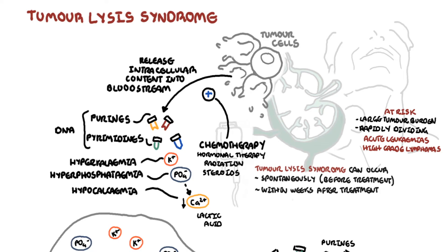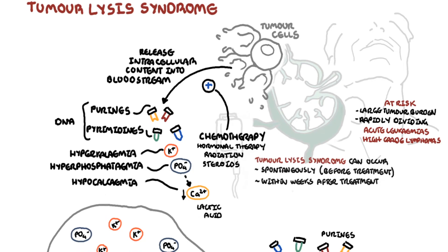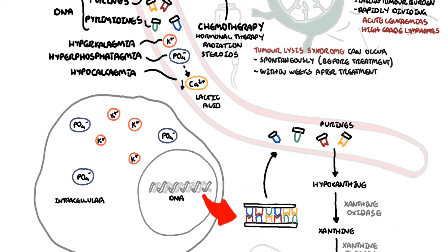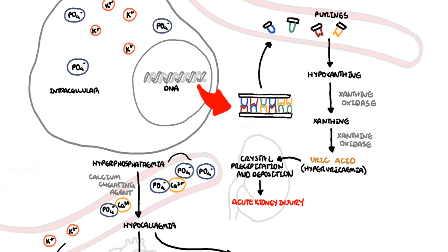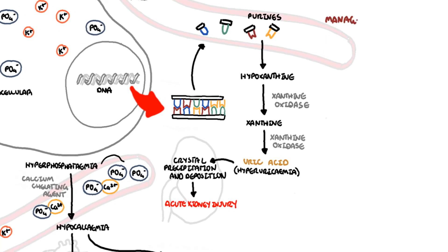Patients who are dehydrated and those with existing kidney dysfunction are at a higher risk of developing tumor lysis syndrome. Therefore, the management really is to prevent it from occurring by identifying the patients at risk — often the highly proliferative hematological malignancies mentioned.